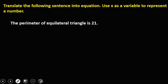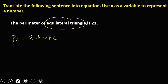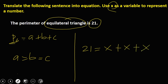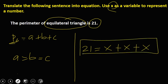'The perimeter of an equilateral triangle is 21.' The formula for the perimeter of a triangle is a + b + c. Since it is equilateral, a = b = c. Using x as a variable, the equation is: 21 = x + x + x. If you want to simplify: 21 = 3x.